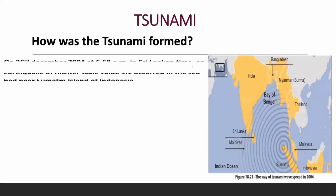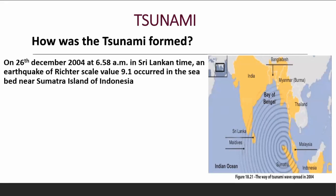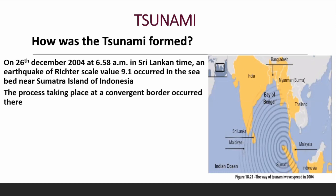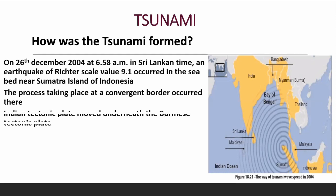So how was the tsunami formed? On the 26th December 2004 at 6:58 a.m. in Sri Lankan time, an earthquake of Richter scale value 9.1 occurred in the seabed near the Sumatra islands of Indonesia. The process taking place at a convergent border occurred there. At a convergent border, two tectonic plates collide and one plate moves underneath the other. The Indian tectonic plate moved underneath the Burmese tectonic plate.